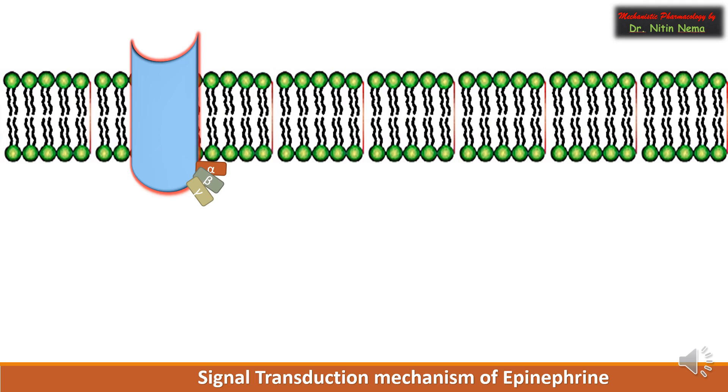As soon as epinephrine binds to the G protein coupled receptor, a conformational change occurs in the receptor which leads to GDP-GTP exchange mechanism.